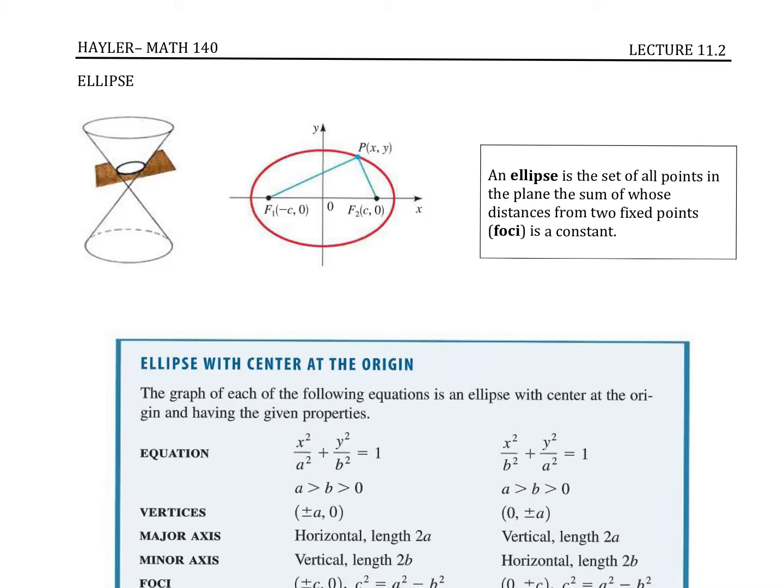Welcome to lecture 11.2. We're almost there — we only have two more sections to go. So now we are still looking at conic sections, but this time we're looking at something called the ellipse.